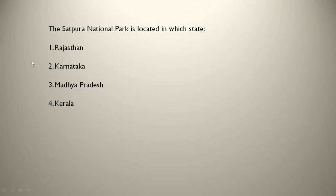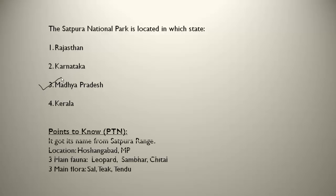The Satpura National Park is located in which state? Satpura National Park is located in Madhya Pradesh. The three main fauna are leopard, sambar, and cheetal. The three main flora are sal, teak, and tendu — these are types of trees found here.